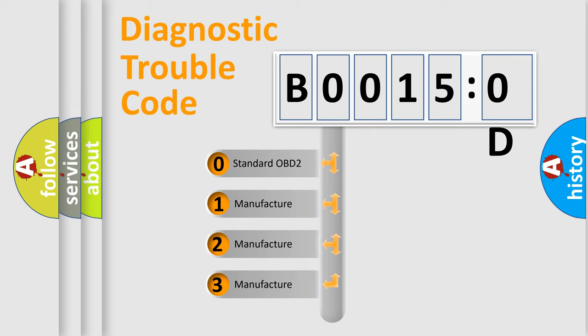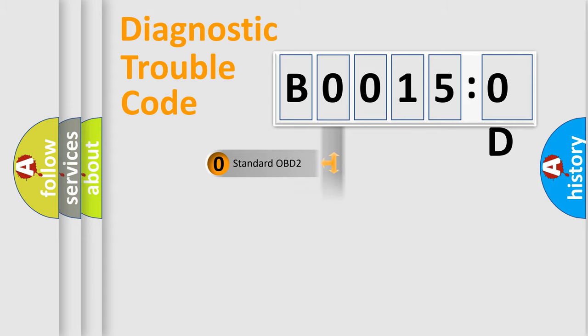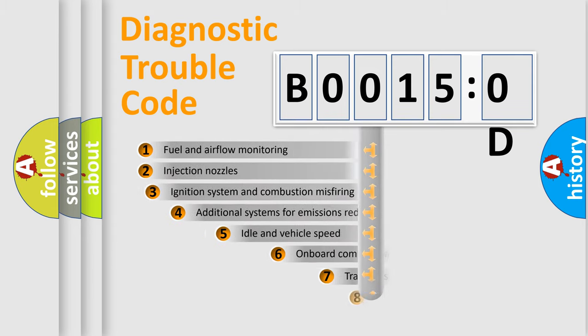If the second character is expressed as zero, it is a standardized error. In the case of numbers 1, 2, 3, it is a more prestigious expression of the car-specific error.